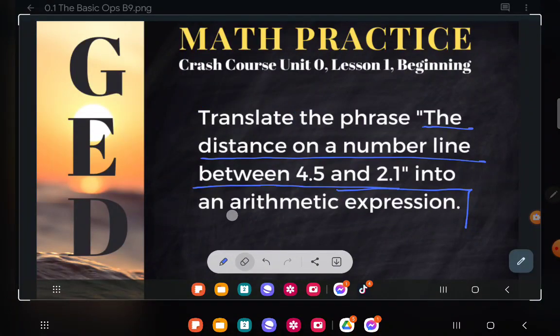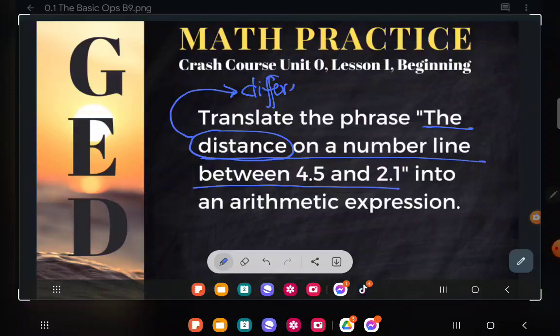We are doing the distance on a number line between 4.5 and 2.1. And hopefully by now, you're aware that distance is a synonym with another mathematical term, difference. Whether you're saying distance or difference, the way to find that is to subtract.